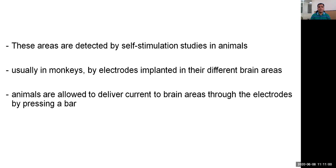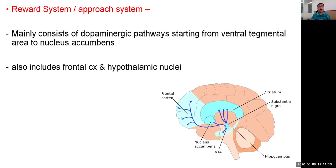These areas are detected by self-stimulation studies in animals, usually in monkeys, by electrodes implanted in different parts of the brain. Animals are allowed to deliver current to brain areas through the electrodes by pressing a bar. The reward system mainly consists of dopaminergic pathways starting from the ventral tegmental area to the nucleus accumbens. The pathway is dopaminergic and ultimately terminates into the nucleus accumbens.